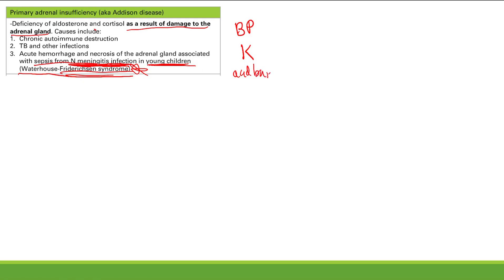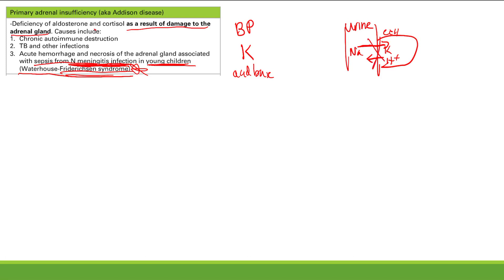In the renal tubule, aldosterone stimulates reabsorption of sodium and in return you secrete potassium and H+. If you don't have enough aldosterone, this doesn't happen: you have decreased sodium reabsorption so blood pressure decreases, potassium is not excreted so potassium increases, and H+ is not excreted so you develop metabolic acidosis.